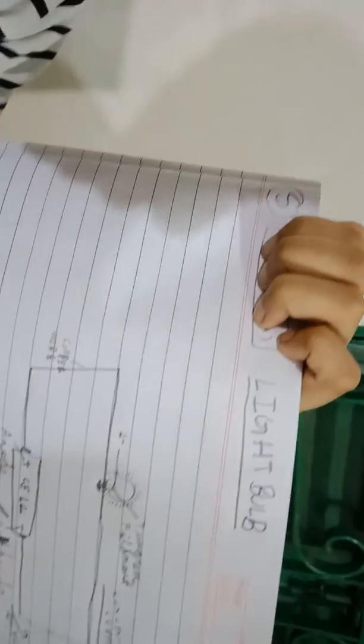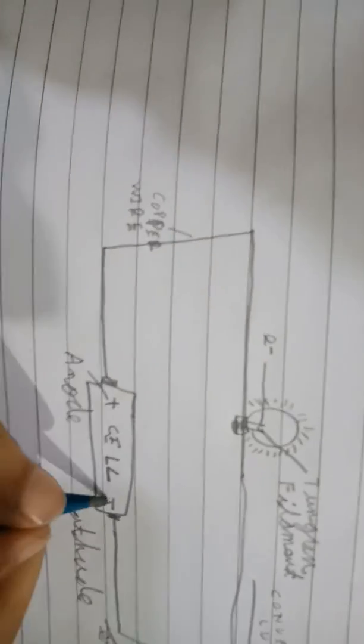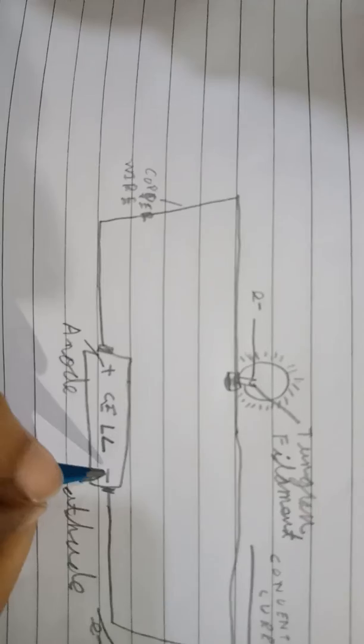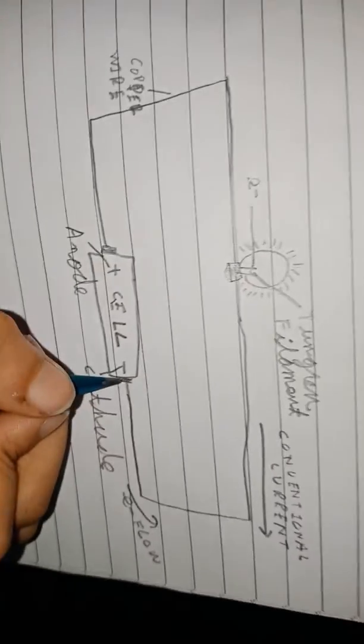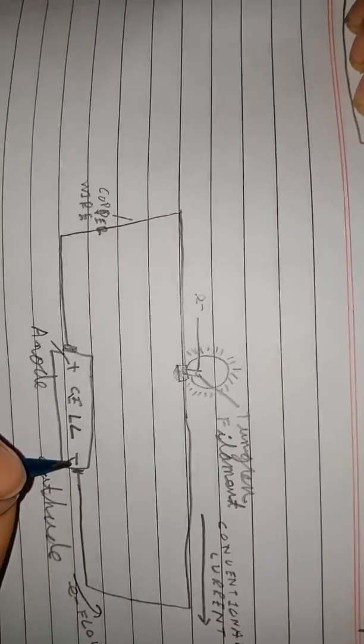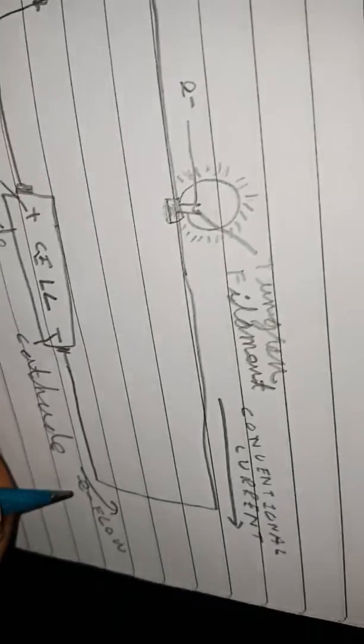You know that negative is always attracted to positive, so the electron is negative. So what happens here, the electron comes out of here and you see that the electron flow is here.